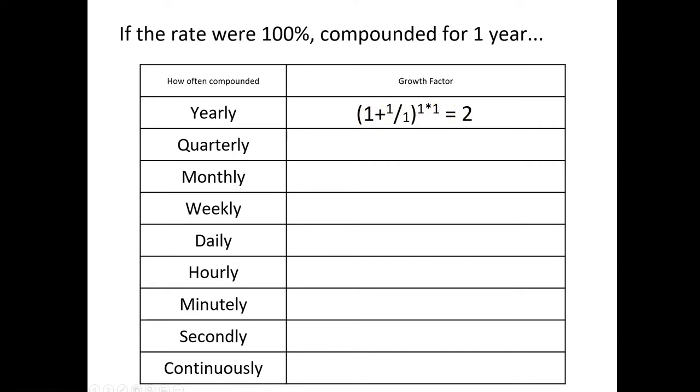2 to the first power is 2. Now if I did it quarterly, I would take that 1 divided by 4, but then it would happen 4 times a year, and I'd get 2.4414. So whatever I started with, it would be worth 2.44 of what I put in. Like the first one, I would double my amount, here I would take my amount times 2.44.